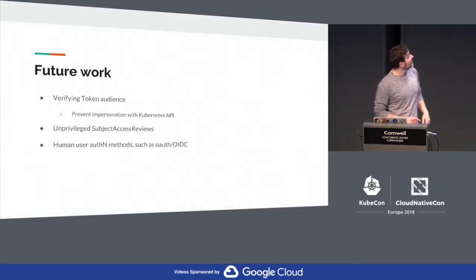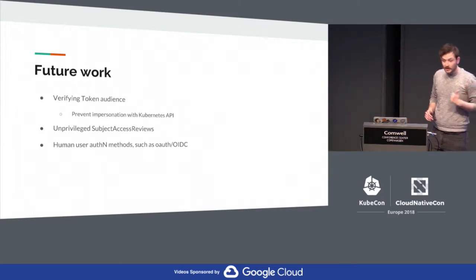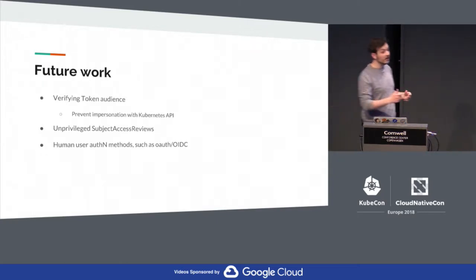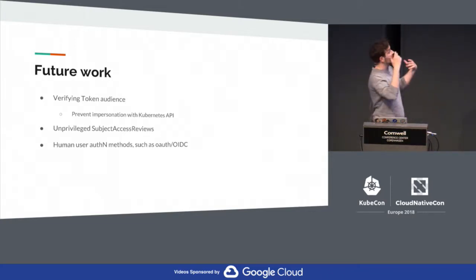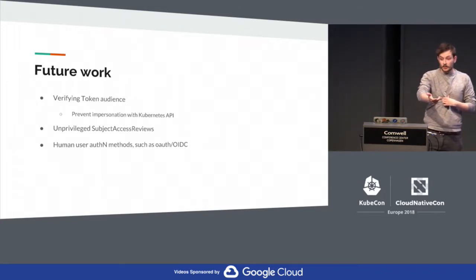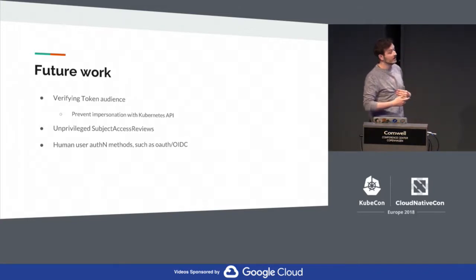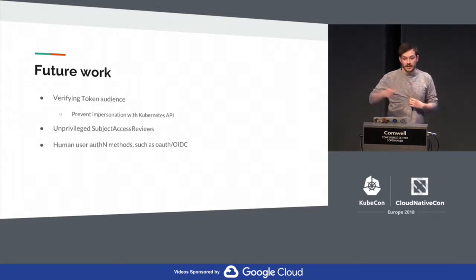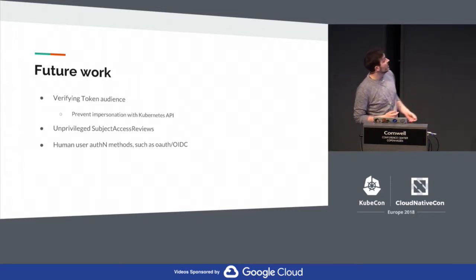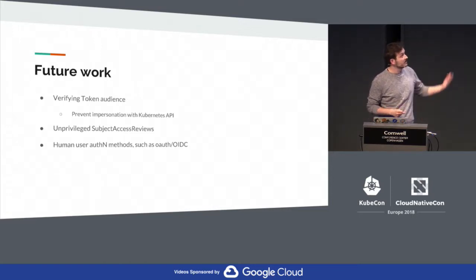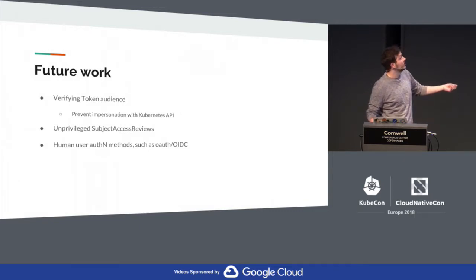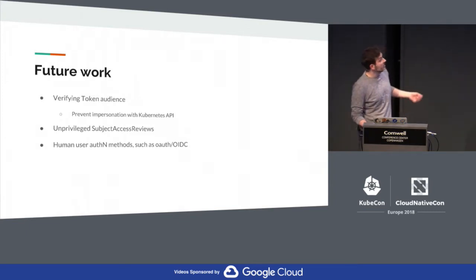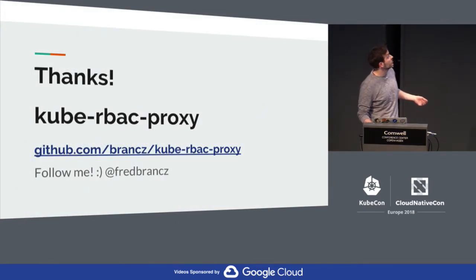Within my last 15 seconds: some feature work includes using the token request API. Right now, it's not super secure to use the service account tokens, because the token can be used to impersonate the requesting entity. With the token request API, it can specify an audience, so it can't be used to authenticate against the API server. Some unprivileged access reviews, so that my entity doesn't actually need any RBAC for this. And human authentication mechanisms, like OAuth or OIDC, because only machine authentication is possible today.